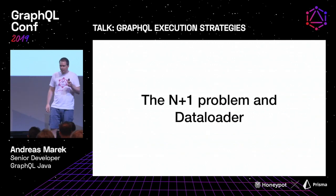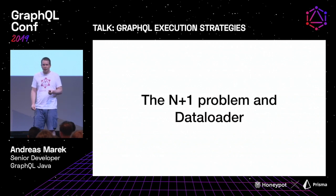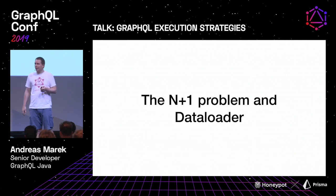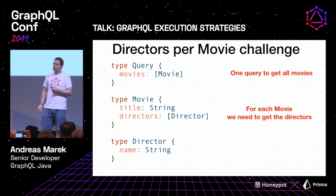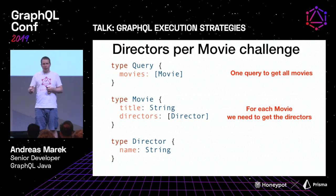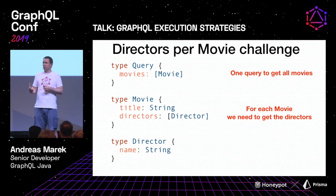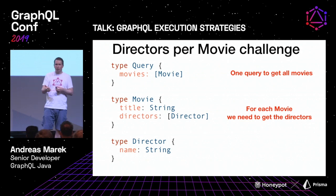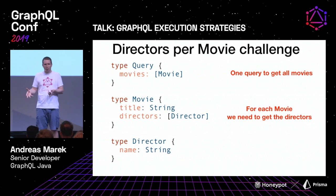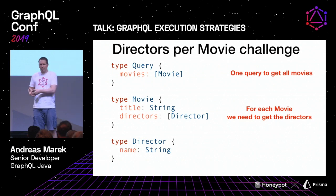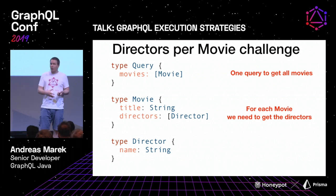But what are the problems in real-life projects? The most prominent is the problem of too many queries — the n+1 problem. In our example, assume we need one query to get all movies and we get 100 movies back. The naive implementation makes a new call for every movie to get its directors — one query for movies and n queries for directors. With 100 movies you get 100 director queries, and this doesn't scale.